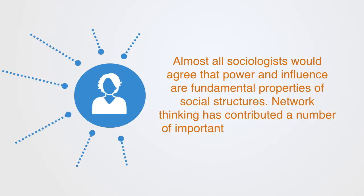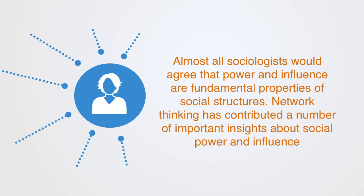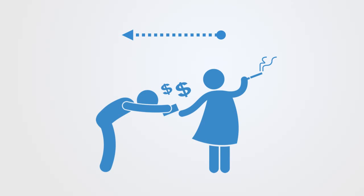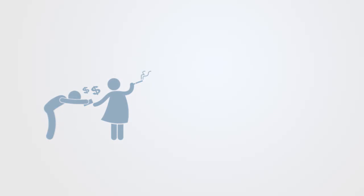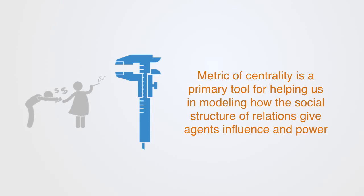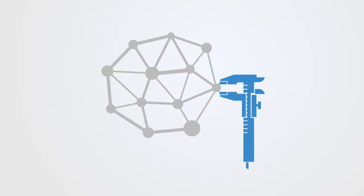Almost all sociologists would agree that power and influence are fundamental properties of social structures. Network thinking has contributed a number of important insights about social power and influence. Perhaps most importantly, the network approach emphasizes that power is inherently relational. An individual does not have power in the abstract — they have power because they can dominate others, and ego's power is an alter's dependence. This metric of centrality is a primary tool for modeling how the social structure of relations gives agents influence and power.